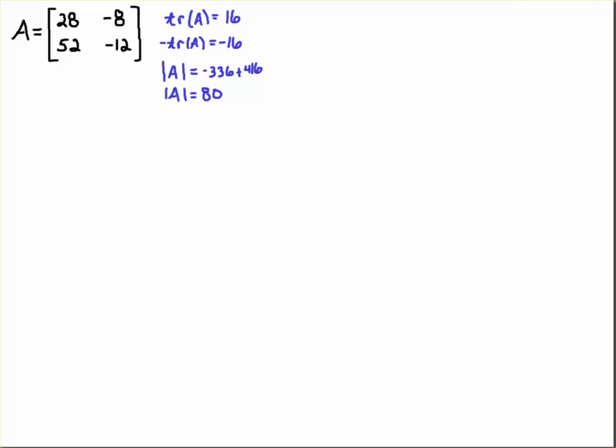Alright, so I'm going to once again use this nice formula I like to use where for a 2x2 system the characteristic equation is lambda squared minus the trace of A lambda plus the determinant of A. So it looks like this. We have this equation here.